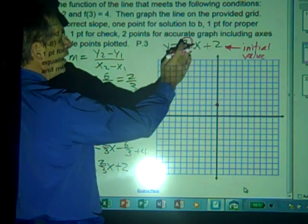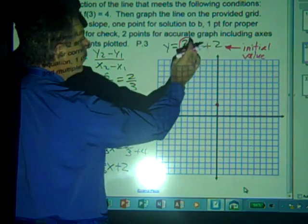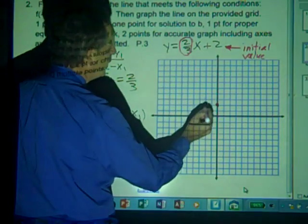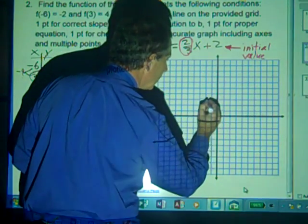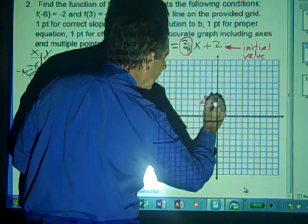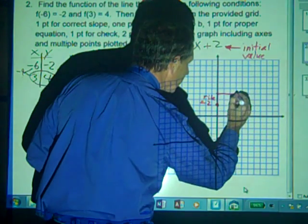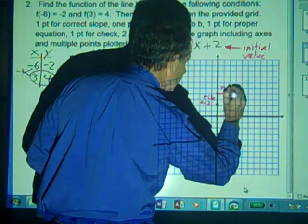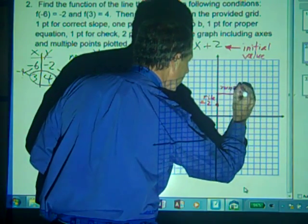Now if we have an integer, if we had say 2x, it would be 2 over 1. So our rise is 2, and next we go to the right 3 units, and we call this our run, which equals 3.